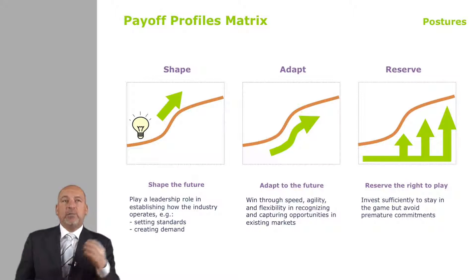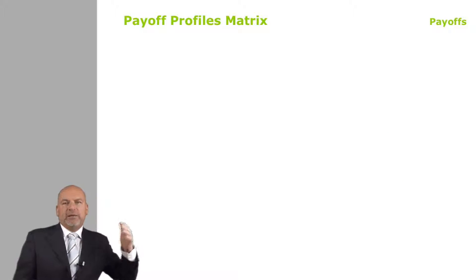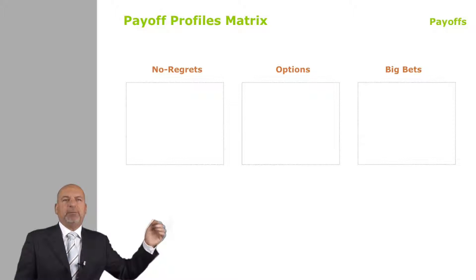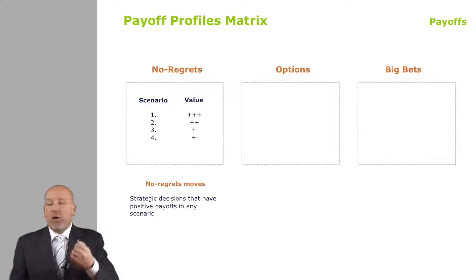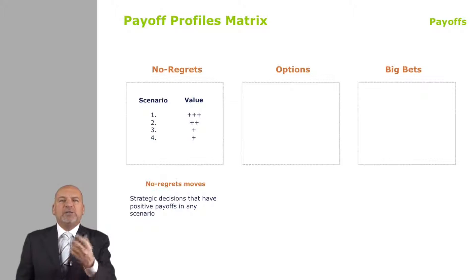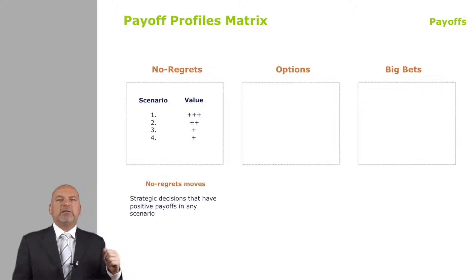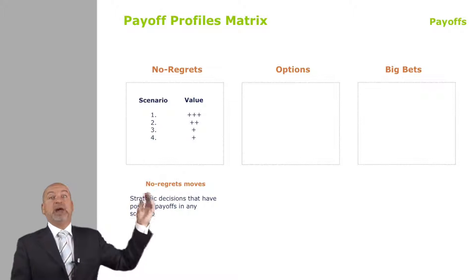The second dimension in the payoff profiles matrix is the payoff — the bets. There are broadly three types of bets in this context: no regret moves, options, and big bets. No regret moves are decisions that have a positive outcome in any scenario. I tend to think of training as falling in that category — training always has a positive outcome, sometimes a little bit positive, sometimes very positive.